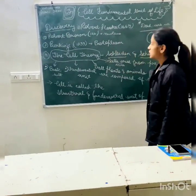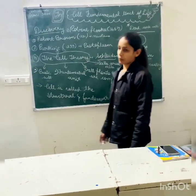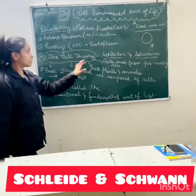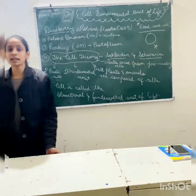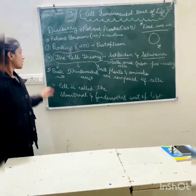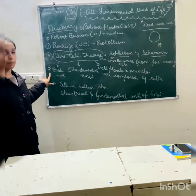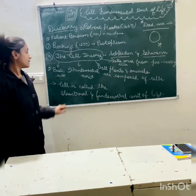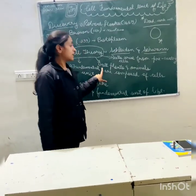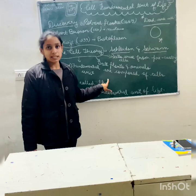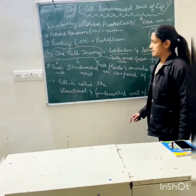Now let's come to know about the cell theory. The cell theory gave us four basic points. The cell theory was given by Schleiden and Schwann when they were working on experiments. According to the cell theory: the cell is the basic unit of life; it is the fundamental unit of life; all plants and animals are composed of living cells; and cells arise from pre-existing cells.